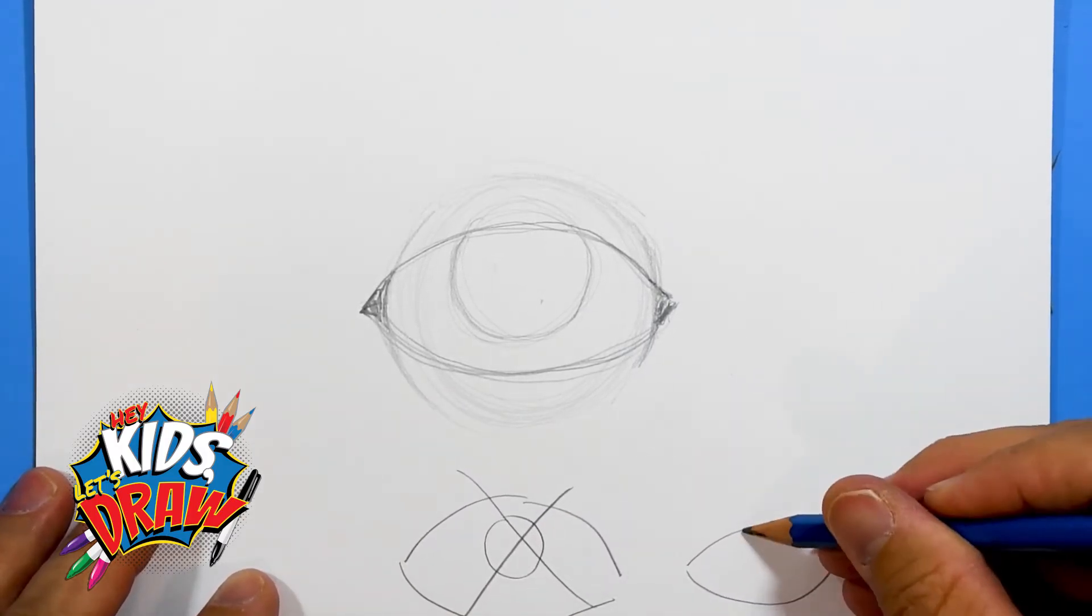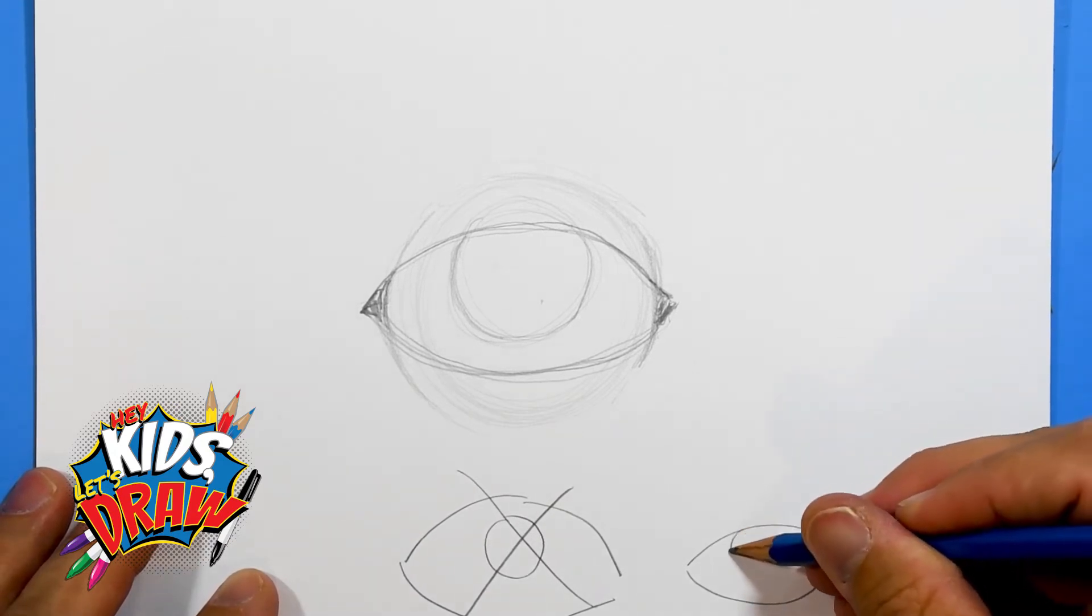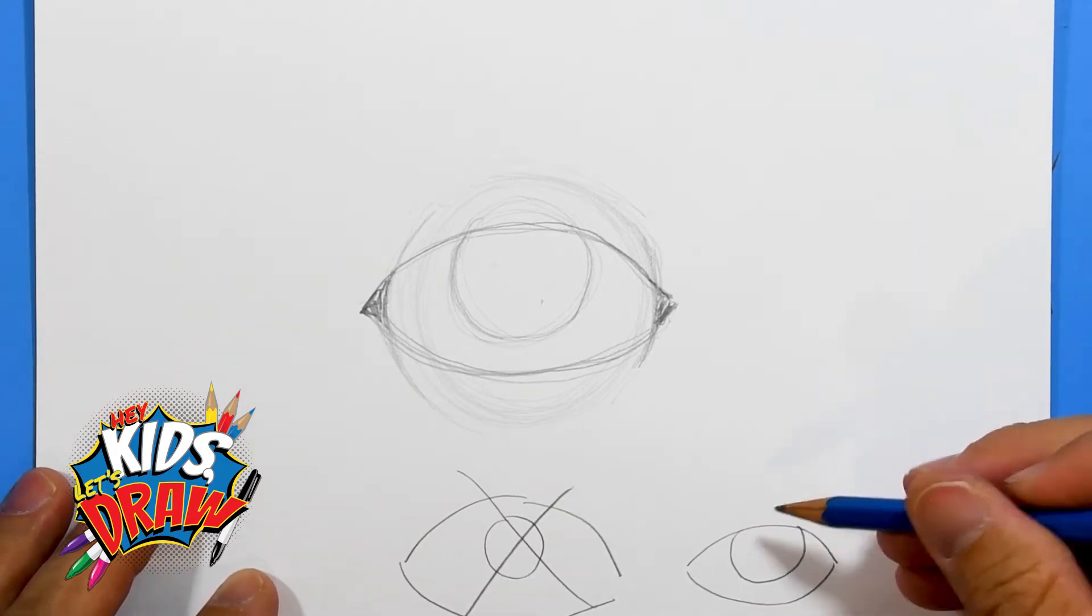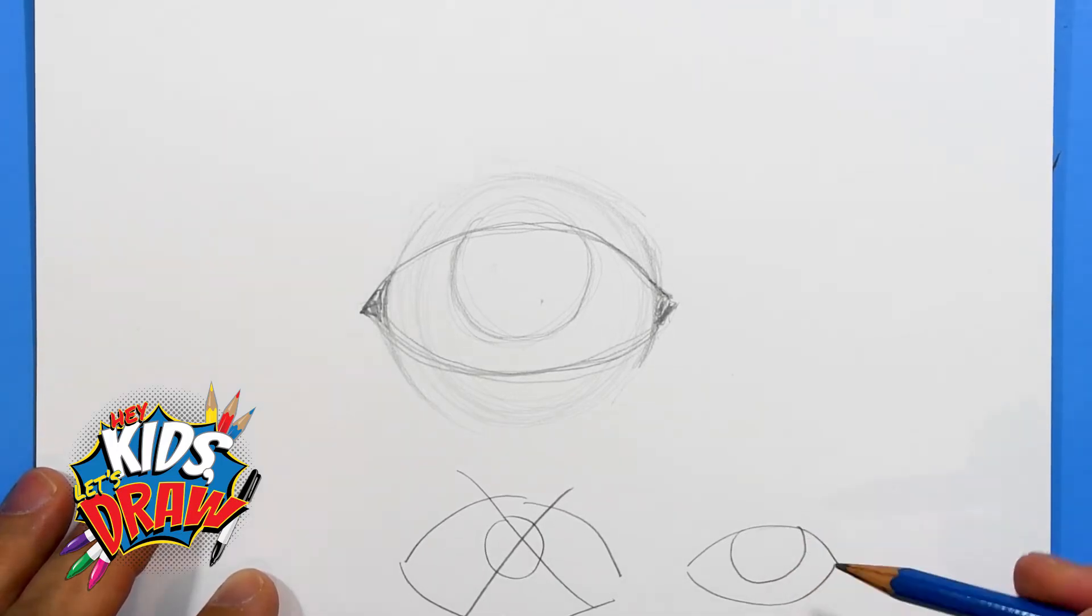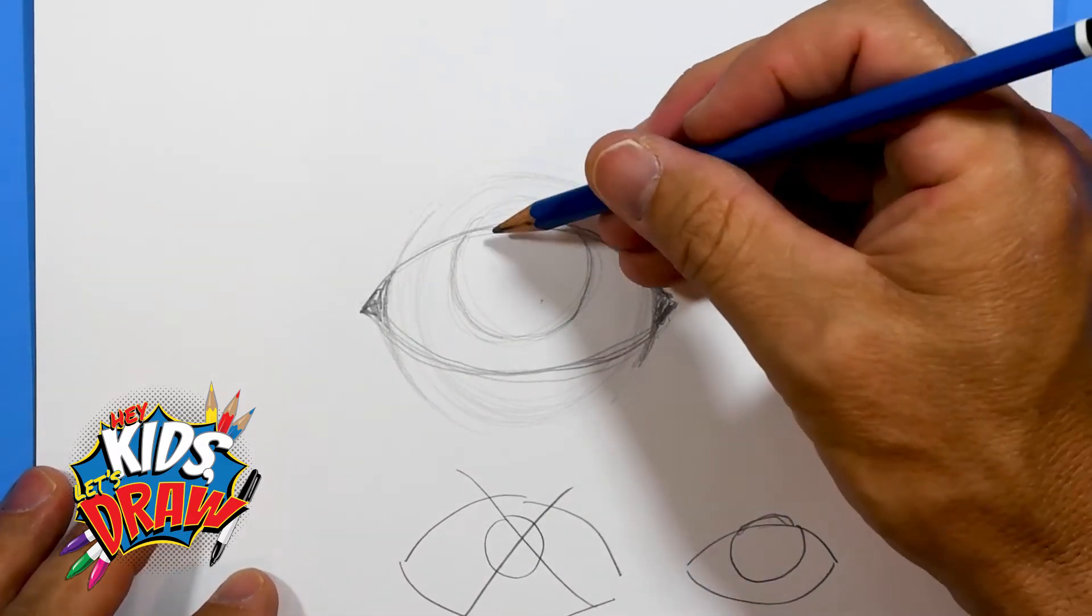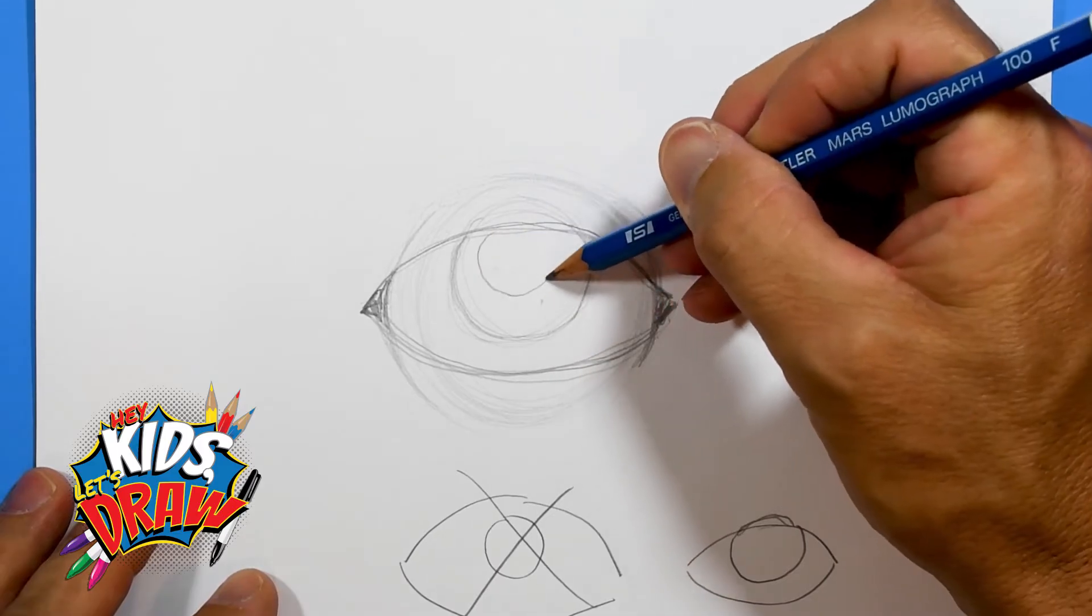So it's kind of covered up, you see how that works? And we're gonna draw the pupil.